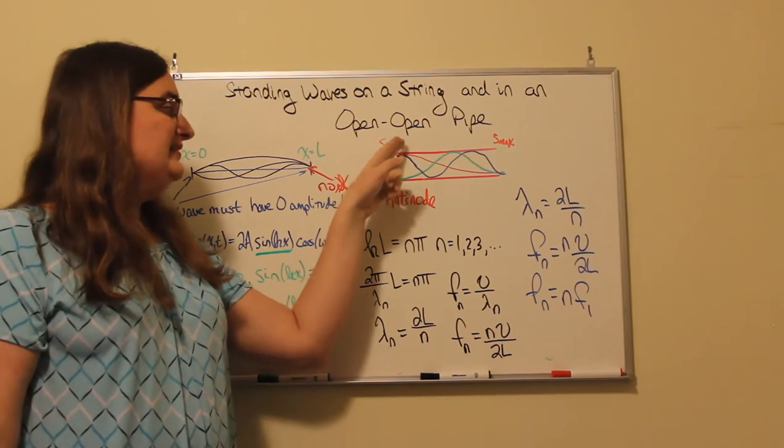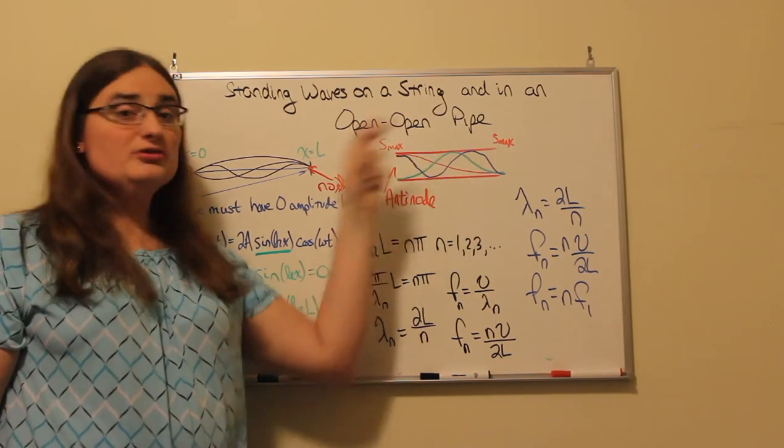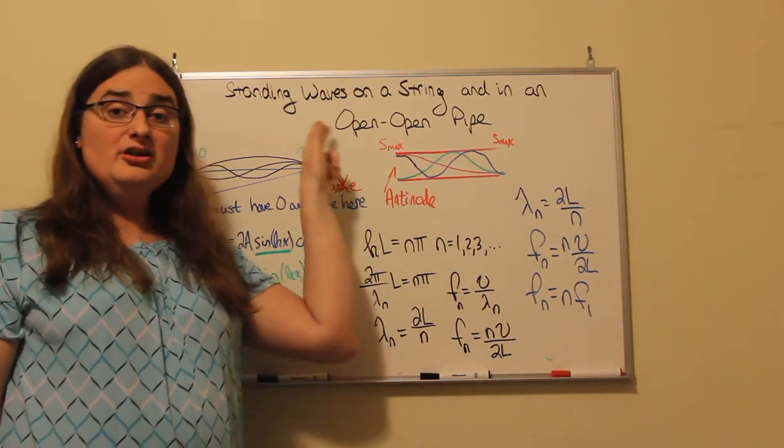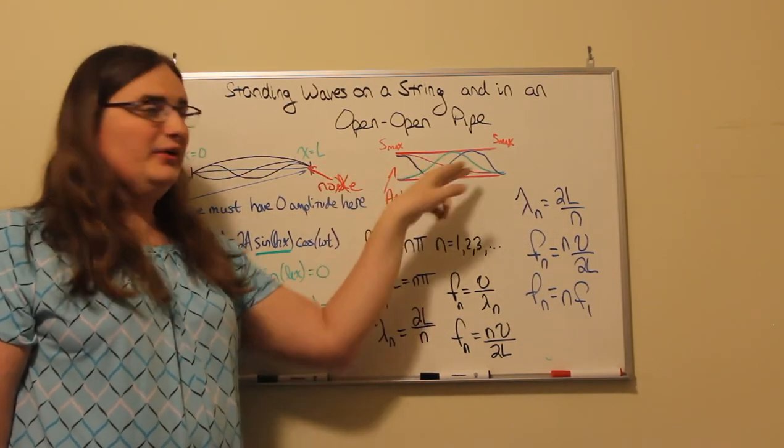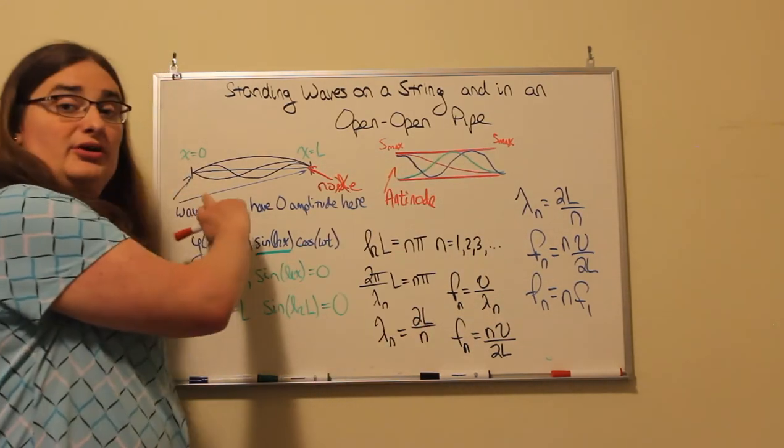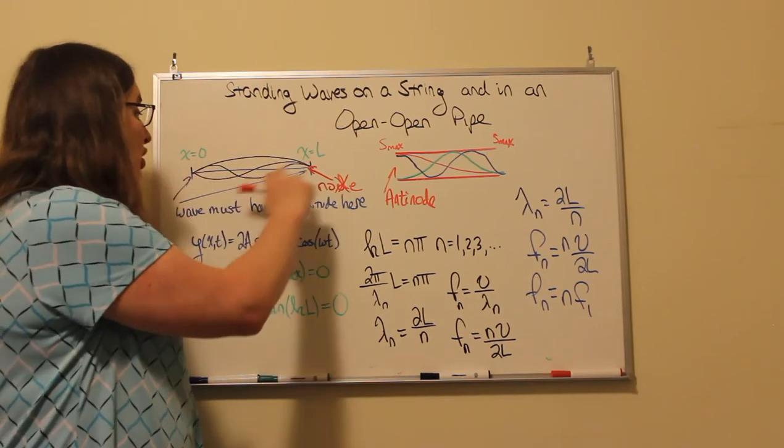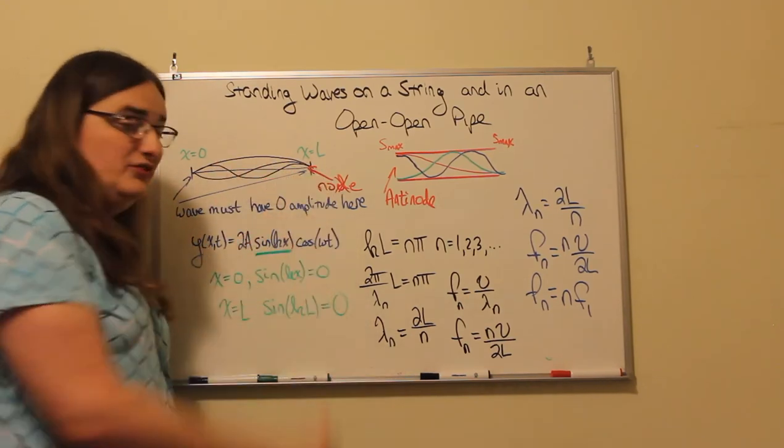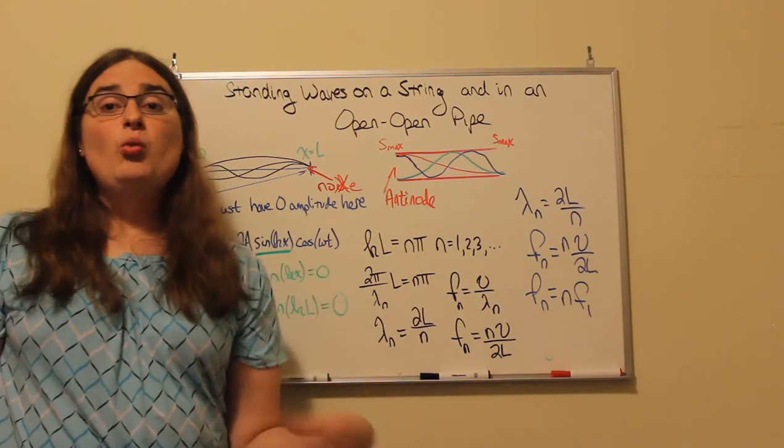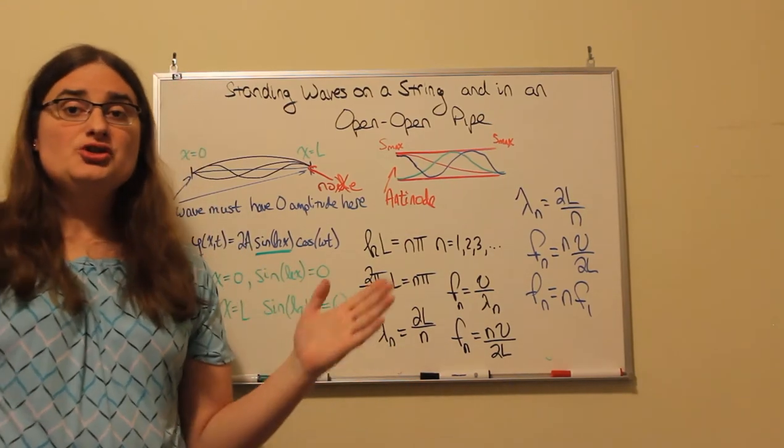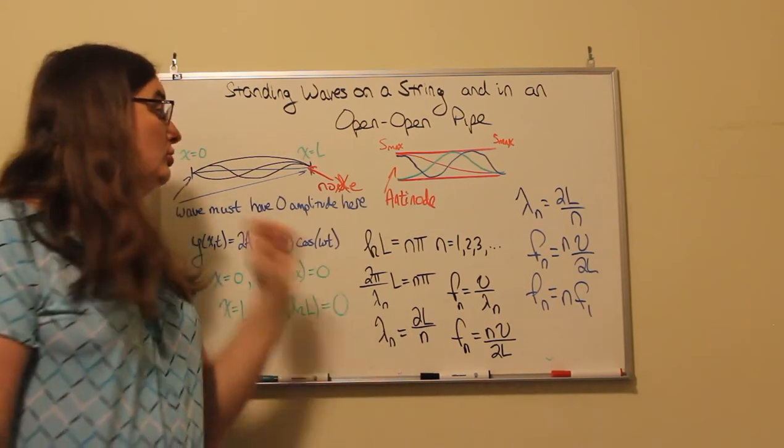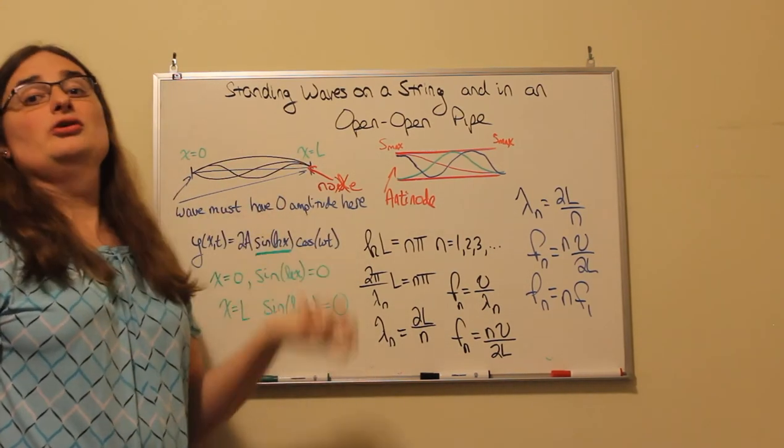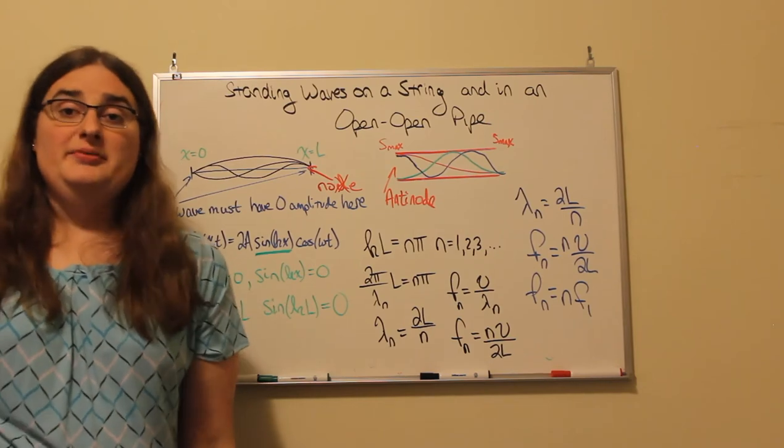So we would end up going from an anti-node to a node in the middle to an anti-node. We could still fit half a wave or a full wave or three halves of a wave, just like we do on a string. It's just the waves that we choose go from anti-node to anti-nodes with nodes in the middle, rather than node to node with anti-nodes in the middle.